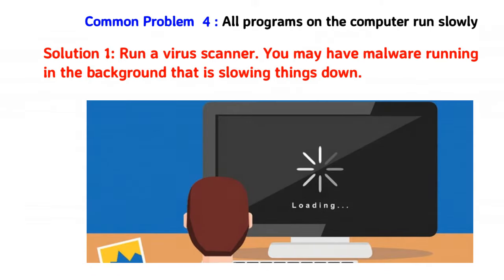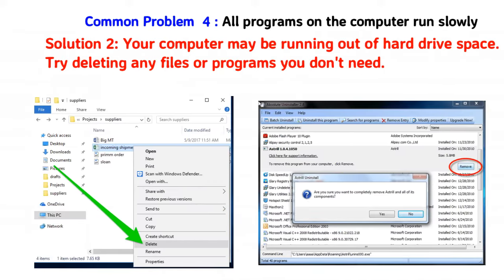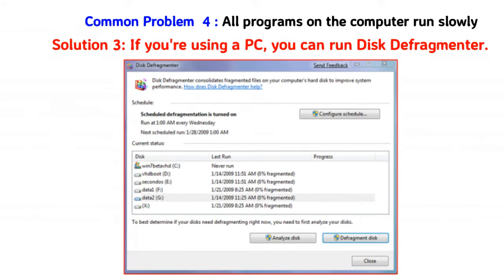Common problem 4: all programs on the computer run slowly. Solution 1: Run a virus scanner. You may have malware running in the background that is slowing things down. Solution 2: Your computer may be running out of hard drive space. Try deleting any files or programs you don't need. Solution 3: If you're using a PC, you can run Disk Defragmenter.